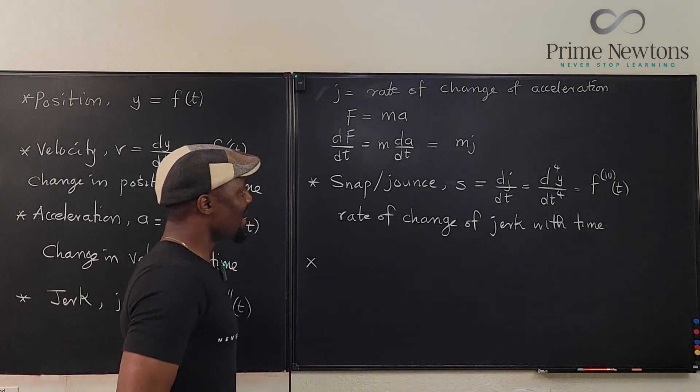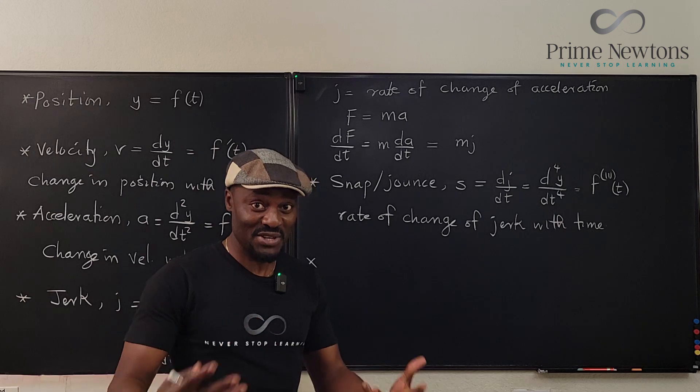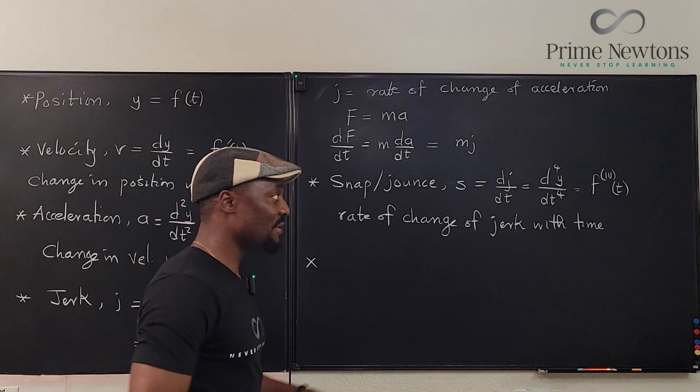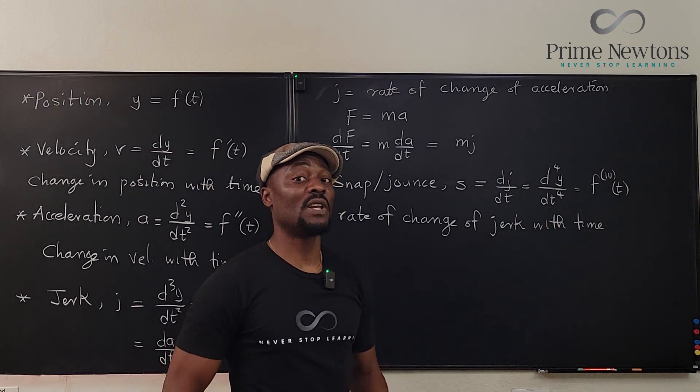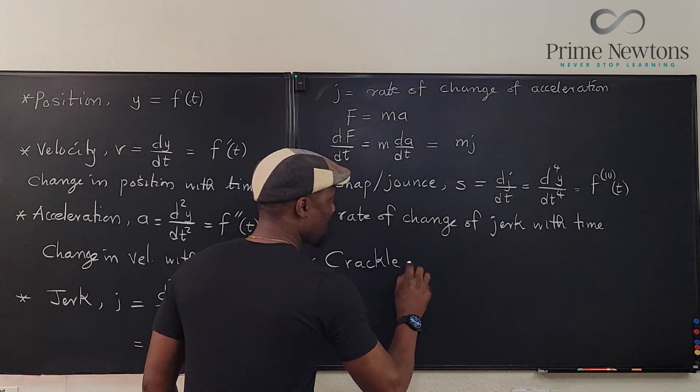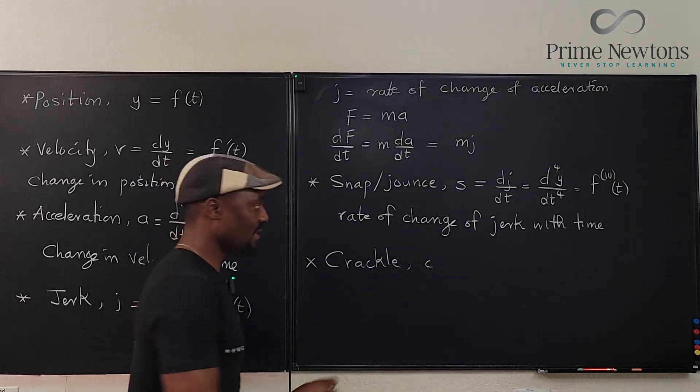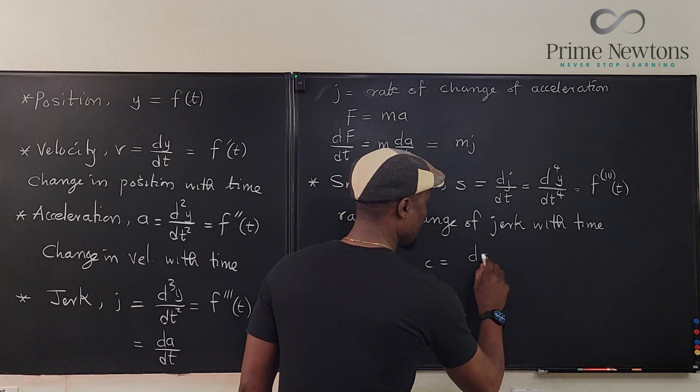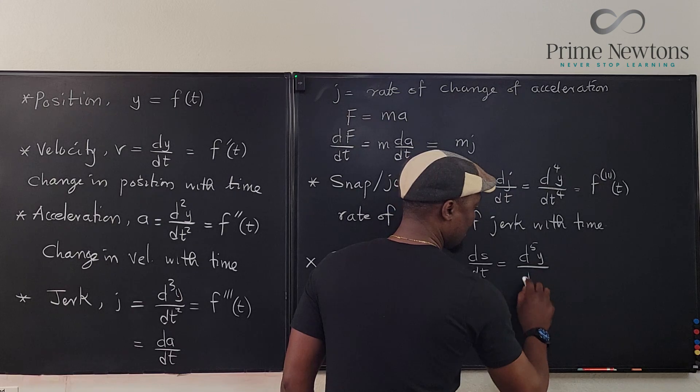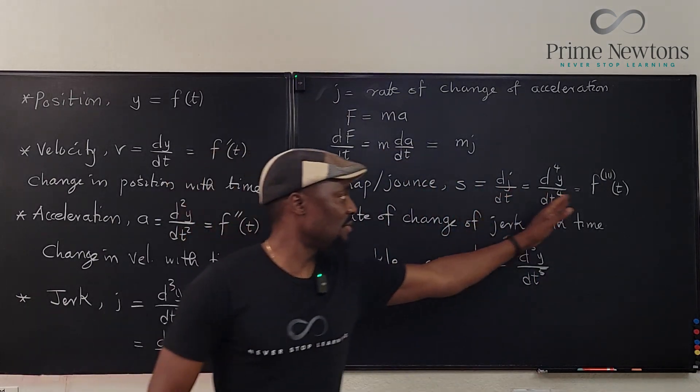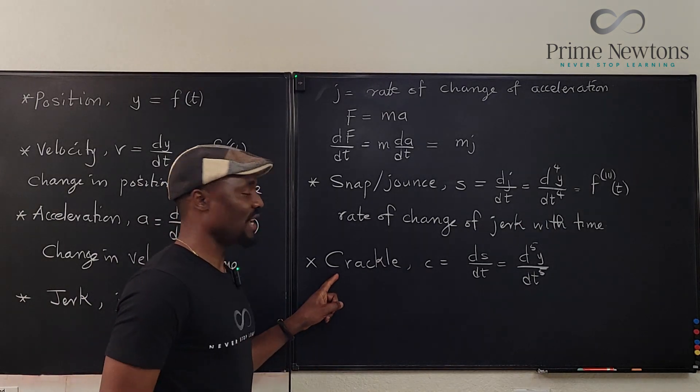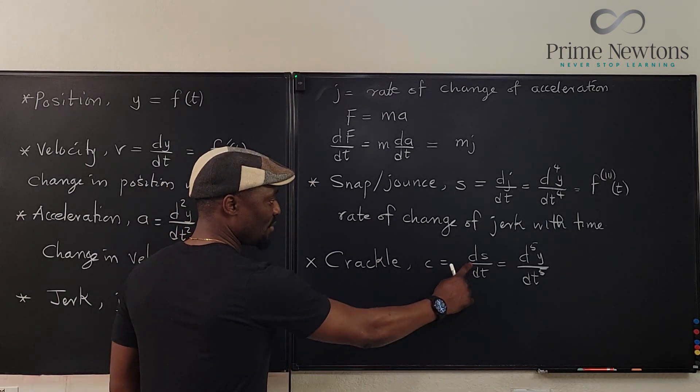So, the next one, which I really can't conceptualize, because it's beyond my understanding. I just know what it is. I know that after you go beyond snap, if you take this derivative one more time, you get what you call a crackle. And the symbol for that is c. Small letter c is going to be ds/dt, which is equal to d⁵y/dt⁵. I'm going to stop there. Just repeat the same thing. That's it. And this is the rate of change of snap with time. Just as we wrote here.